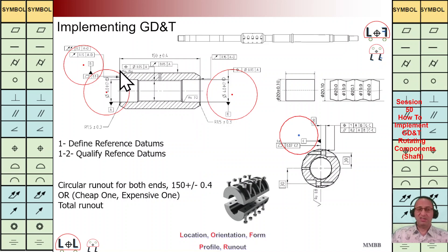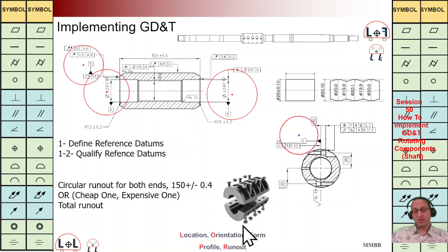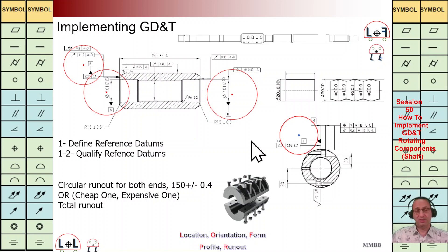Today we will talk about the needed GD&T for this short rotating component. We have defined reference axis A here, the first axis D here, and the reference plane B here in order to fix this component and measure other dimensions. We also see the contact area between these two parts, and we are going to have reference plane C here — so we have A, B, and C.